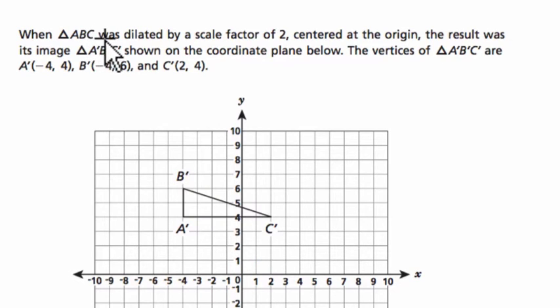When triangle ABC was dilated by a scale factor of 2, that means we took some triangle and multiplied all the points by 2 because it's centered at the origin. So our dilations, all of them will be centered at the origin. Whatever your scale factor is, just multiply all the points by that scale factor.